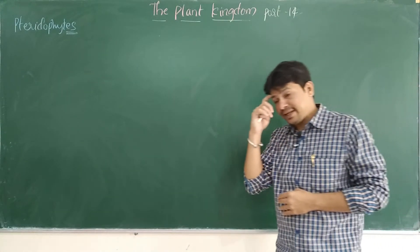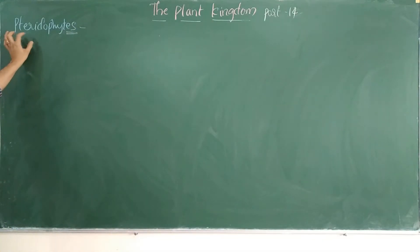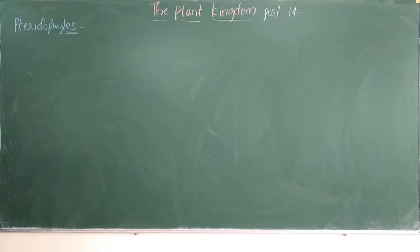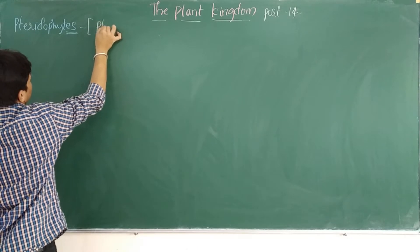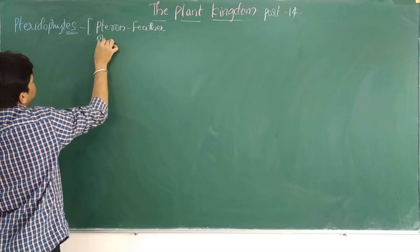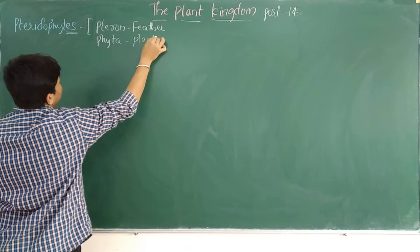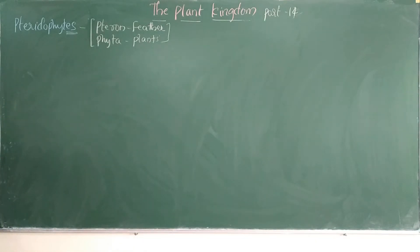So what exactly is meant by pteridophytes? If we split the word, pteridophyta breaks into two parts: 'pteron', which means feathers, and 'phyta', which means plants. So pteridophytes are feather-like plants, named because of the nature of their leaves, which appear similar to feathers.